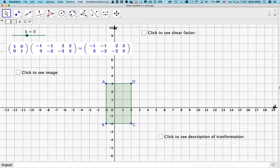Here we have point A, which is minus 1, 3, and you can see that's been written in the matrix here. B is minus 1, 2. C is 2, minus 2. And then D is 2, 3. If we multiply that by this matrix here, at the moment it's the identity matrix, we'll just get the same image. So if we click we'll get the same image.